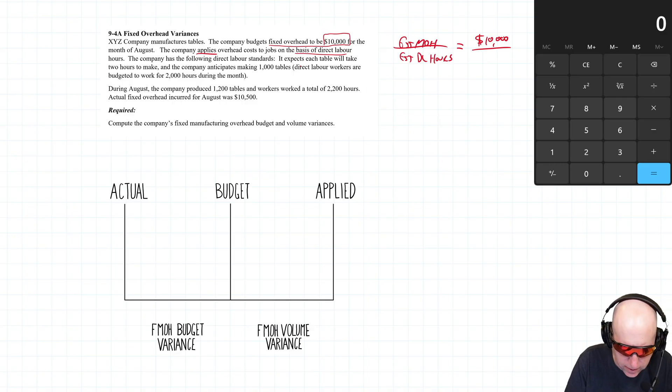The company has the following direct labor standards: it expects each table is going to take 2 hours to make and the company anticipates making 1,000 tables. So 2 hours times 1,000 tables equals 2,000 labor hours. And in fact that's what the next sentence says: direct labor workers are budgeted to work for 2,000 hours.